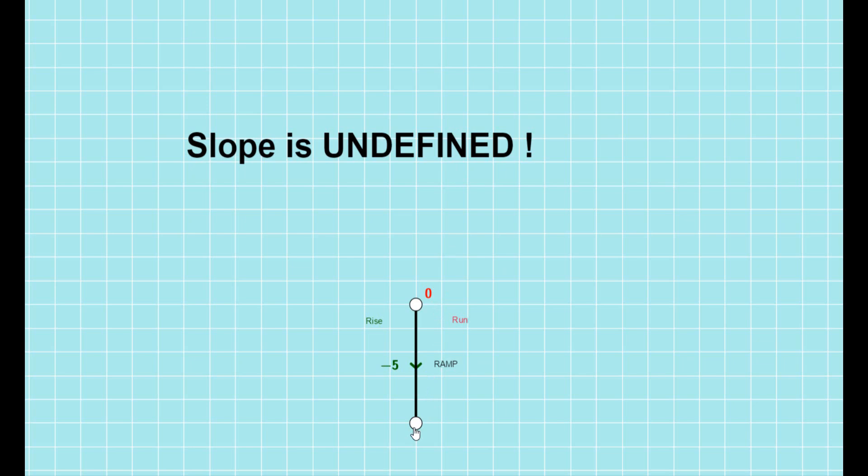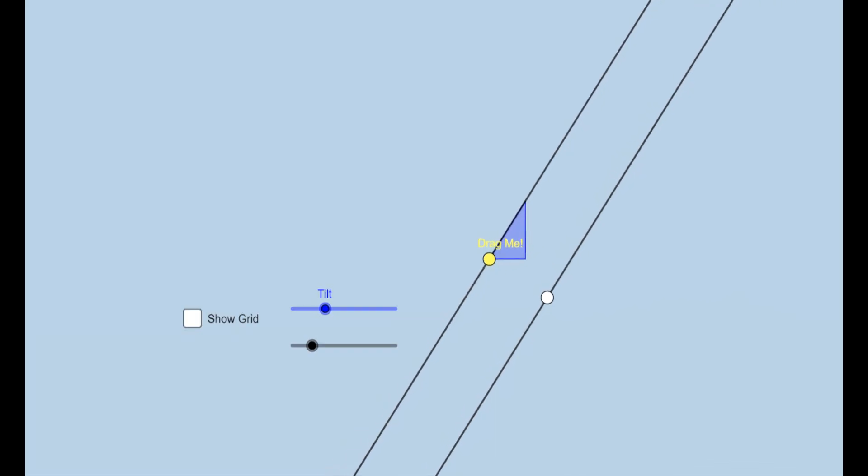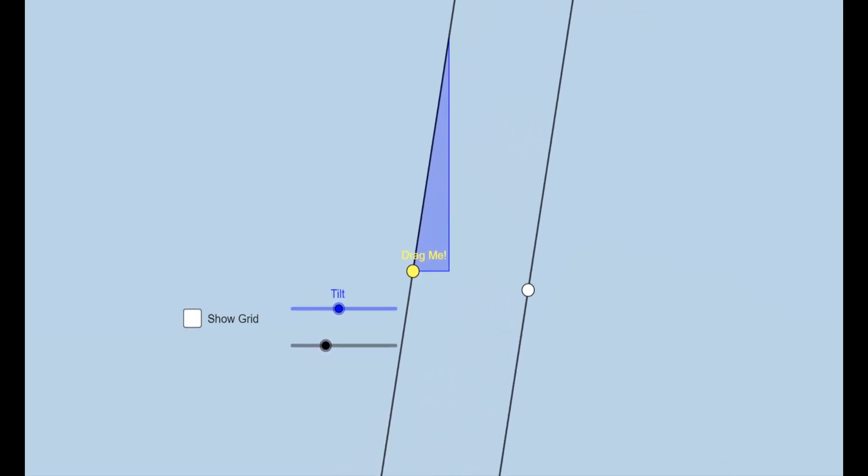Now let's talk about undefined slope. One thing I want to tell you is infinite and undefined are two different things, and so many people confuse between these two. Infinite is a mathematical entity with mathematical meaning, while undefined does not mean anything. In this line, the run is zero, so no matter how much the rise is, the denominator is always going to be undefined.